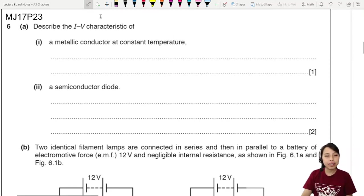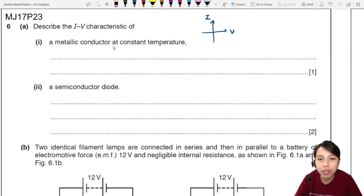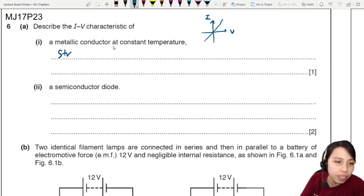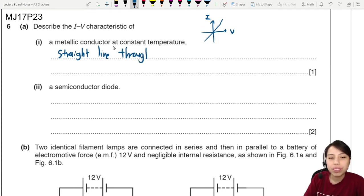MJ17P23 Q6: Describe the I-V characteristic of a metallic conductor at constant temperature. We're going to describe the graph of these I-V curves. A metallic conductor's curve will look something like a straight line. So we draw I against V, we just draw a straight line through the origin.